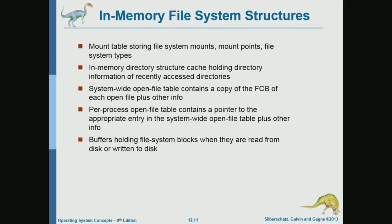In memory, the file system has the mount table, which lists the different volumes that are mounted to the file system. It also keeps a cache of recently accessed directories. Since it doesn't make sense to load information about all directories into memory — especially on a one-terabyte drive with lots of directories and files — the system caches only the frequently accessed directories.